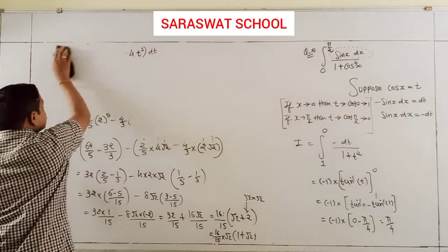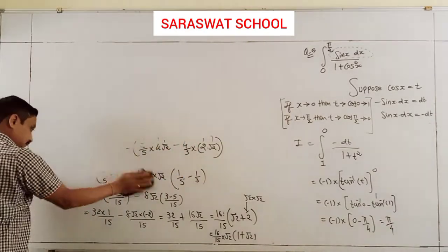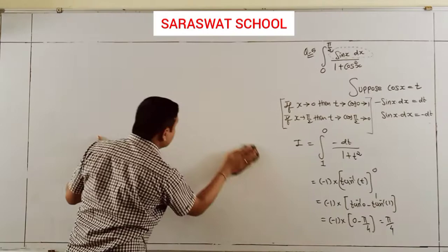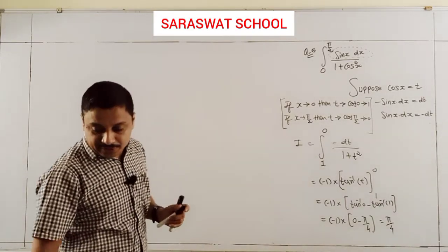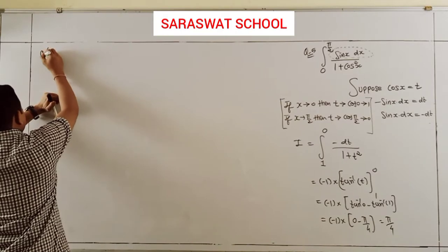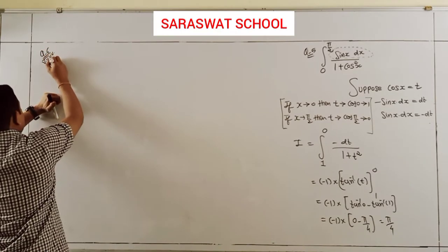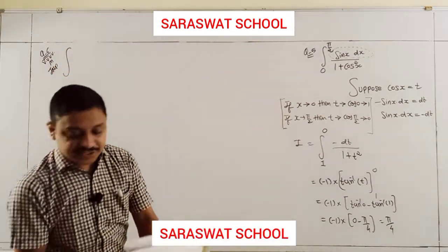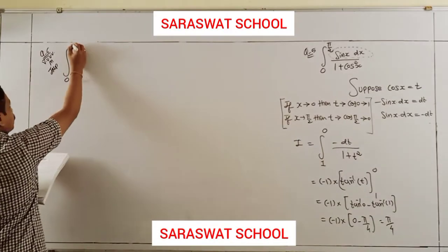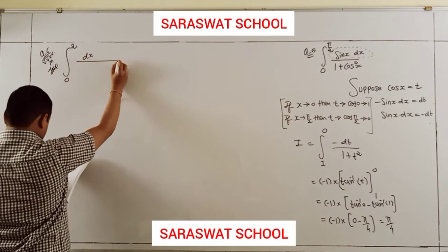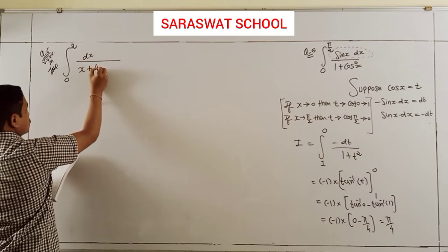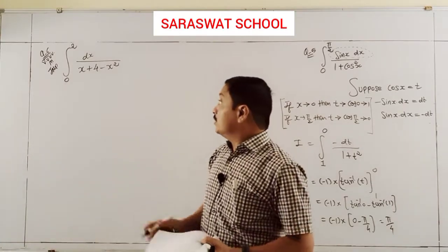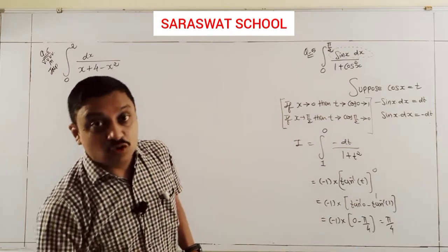Question 6 is also very very most important — a very big numerical. Integrate from 0 to 2: dx divided by (x + 4 - x²). This is a 4-mark question. First of all I arrange according to quadratic completing the square.